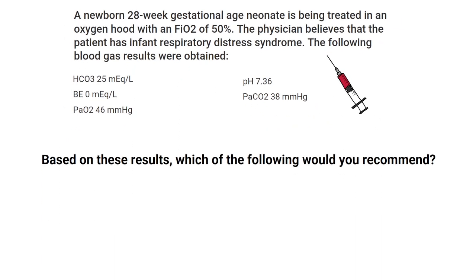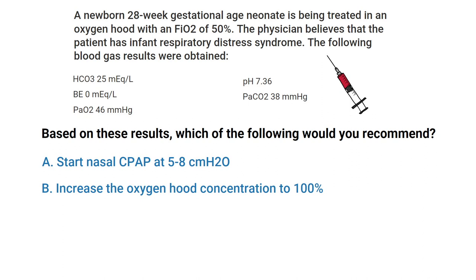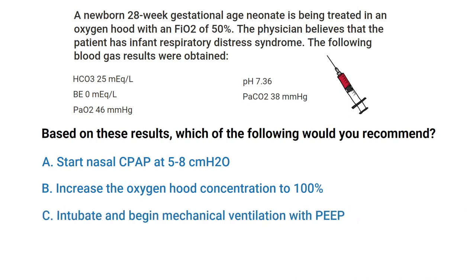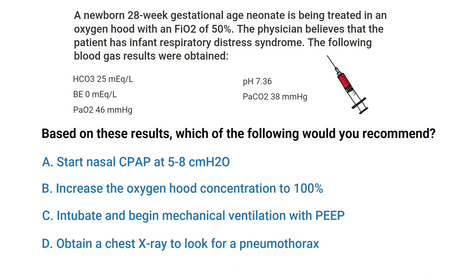Based on these results, which of the following would you recommend? A: Start nasal CPAP at five to eight centimeters of water pressure. B: Increase the oxygen hood concentration to 100%. C: Intubate and begin mechanical ventilation with PEEP. Or D: Obtain a chest x-ray to look for a pneumothorax.